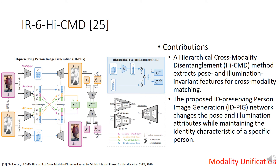The sixth work is Hi-CMD: Hierarchical Cross-Modality Disentanglement for Visible-Infrared Person Re-Identification in CVPR 2020. The framework includes two important components: the hierarchical feature learning module that extracts identity and attribute features, and the ID-preserving person image generation network ID-PIG, which disentangles ID-discriminative factors and ID-excluded factors from cross-modality images. The ID-discriminative factors include body shape and clothes pattern.